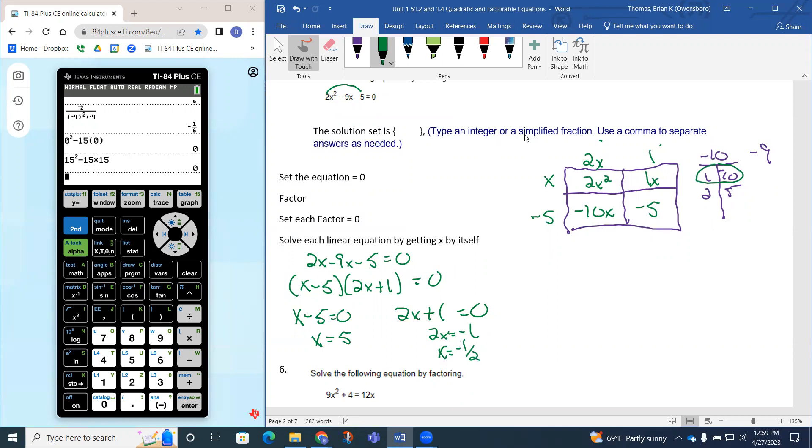Notice our answer has to be an integer or simplified fraction - they do not want any decimals. We have 5 and negative 1 half as our solutions: 5 comma negative 1 half. It doesn't matter what order you put those in, so as long as you have 5 and negative 1 half, that's the correct answer.